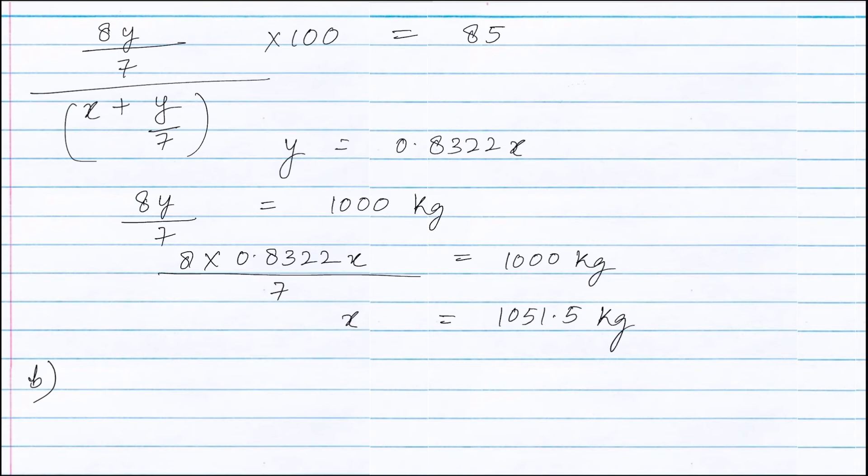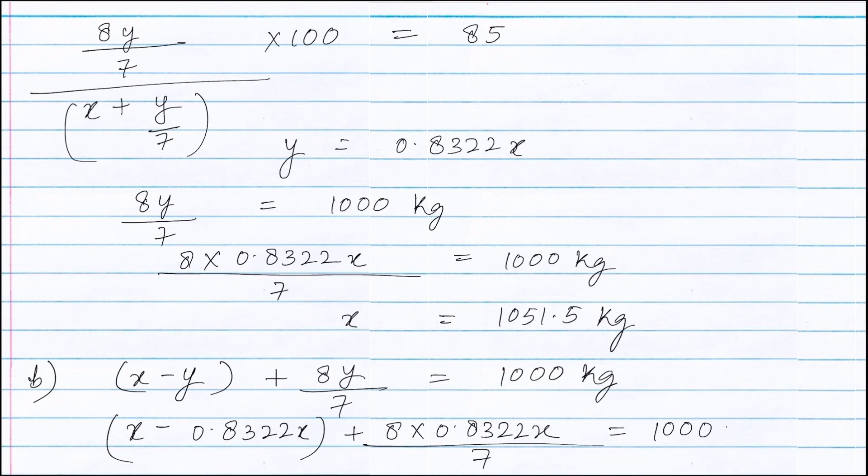The weight of the crude product is 1000 kg. Therefore we can write x minus y grams plus 8y by 7 grams equals 1000 kg. Putting the value of y we get x minus 0.8322x plus 8 times 0.8322x divided by 7 equals 1000 kg.